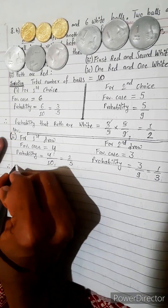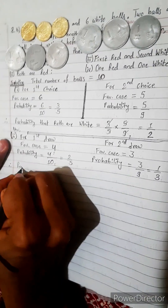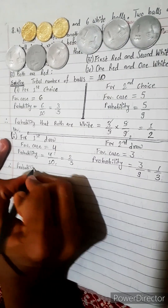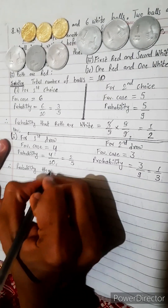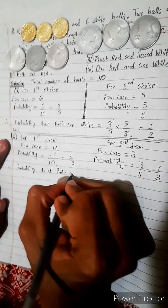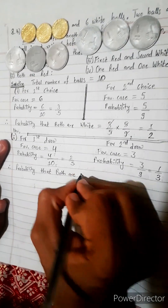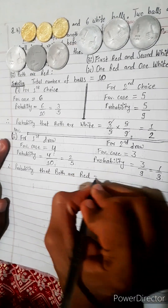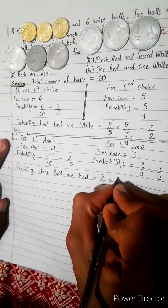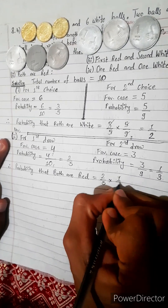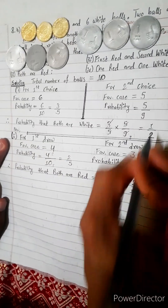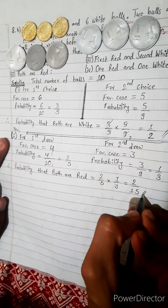Therefore, the final probability that the first ball is red and the second is white is given by two by five multiplied by two by three, which equals four by fifteen.